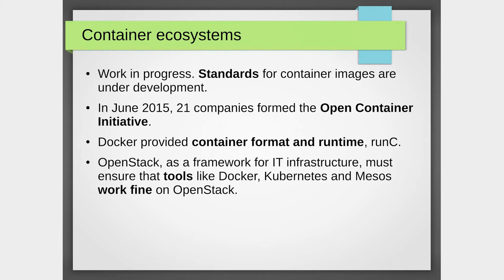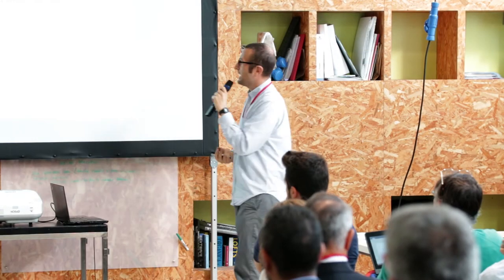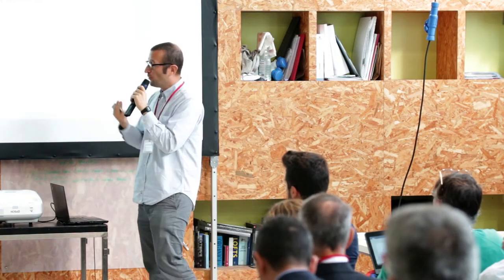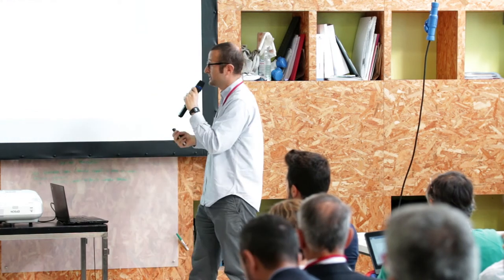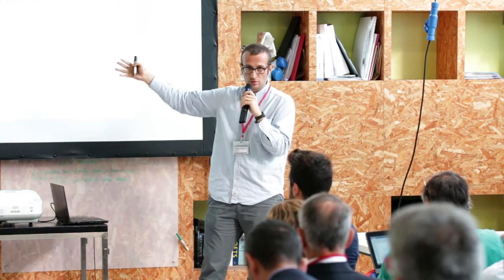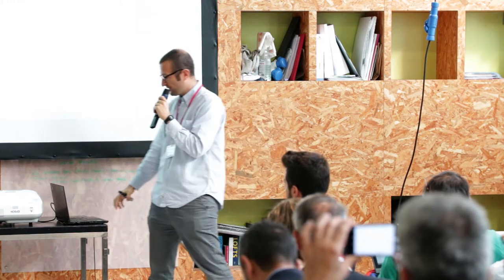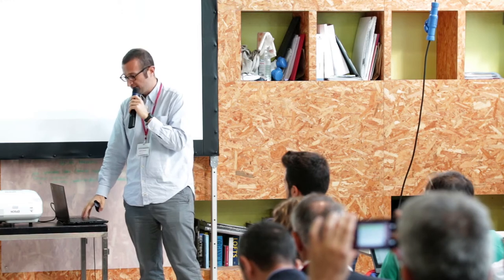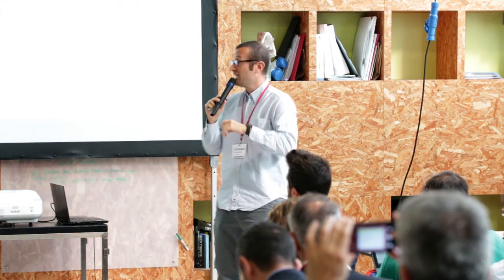These are the three most famous, but not the only ones. It's a work in progress — standards are still under development. In 2015, the Open Container Initiative was born: 21 companies agreed to define standards. Docker provided the container format and the runtime, runC. OpenStack made a commitment so that tools like Docker and Kubernetes can work fine within OpenStack, and all organizations are working toward making it easier and more convenient to use container orchestration engines.